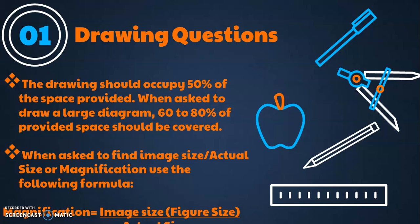First of all, the drawing questions. The drawing should occupy 50% of the space provided if you are just told to draw. When asked to draw a large diagram, 60% to 80% of the provided space should be covered. Number second, when asked to find image size or actual size or magnification, use the following formula: magnification equals image size divided by actual size. Image size means the one printed on your paper, the figure size. In most questions, actual size is given. By using the same formula, you can change the position. If you want to find actual size, then actual size would be image size divided by magnification. Just do cross multiplication to rearrange this formula.